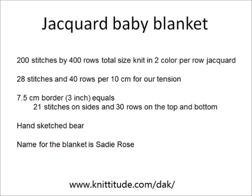We need a few strategies first to determine the size for the design. I want to knit this two color per row jacquard at 28 stitches and 40 rows per 10 centimeters for our tension. Since I want a seven and a half centimeter border around the edges, this means I need to make a border of 21 stitches wide and 30 rows high. Seven and a half centimeters is equivalent to three inches.